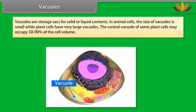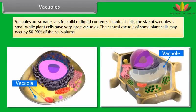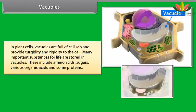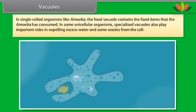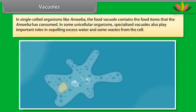Plastids are present only in plant cells, not in animal cells. Plastids are similar to mitochondria in external structure. There are two types of plastids: chromoplasts, which are colored plastids, and leucoplasts, which are white or colorless plastids. Chromoplasts provide different colors to flowers and fruits. Leucoplasts are colorless plastids that store materials like starch, oils, and protein granules. Chlorophyll-containing plastids are known as chloroplasts, which are important for photosynthesis in plants.